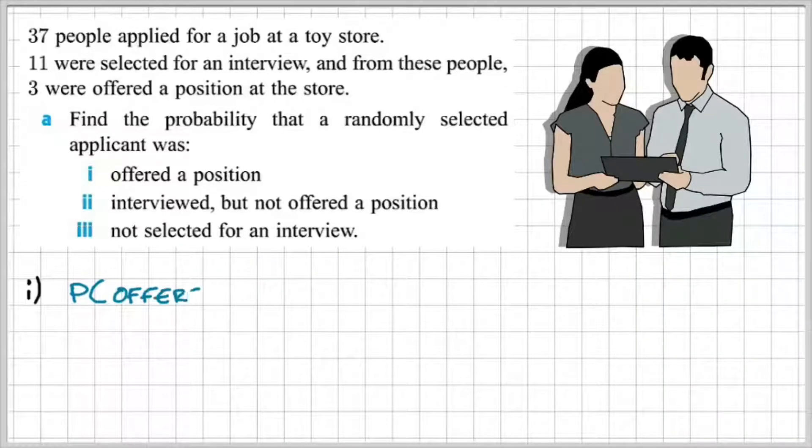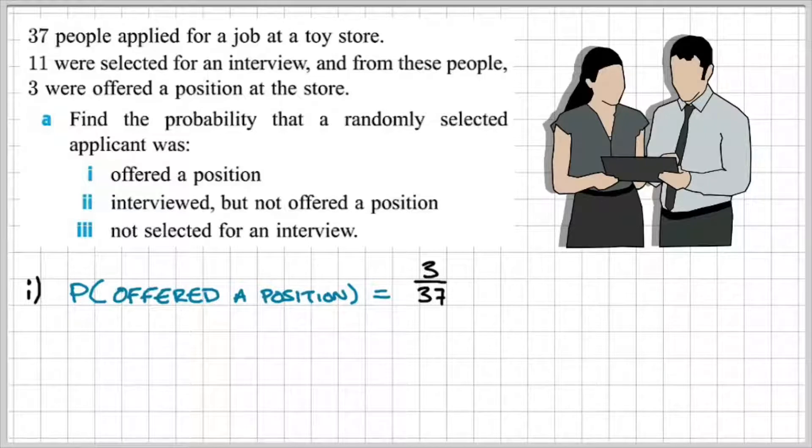Okay, so for part 1, the probability of being offered a position. Well, we know that there were 3 applicants who were offered a position at the store. So that means our favourable outcomes would be 3. And the total number of possible outcomes we know were 37 people. So that would be out of 37. So therefore, the probability of being offered a position is 3 over 37.